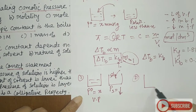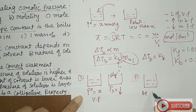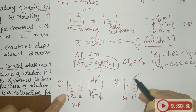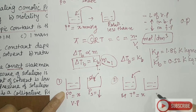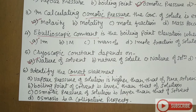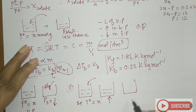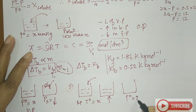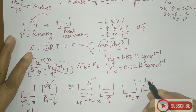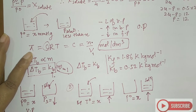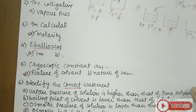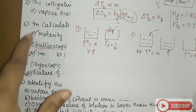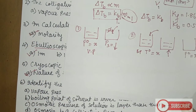For boiling point: adding a solute increases the boiling point of the solution. For osmotic pressure: the osmotic pressure of the solution increases compared to the pure solvent. Osmosis itself is not a colligative property, so any statement calling osmosis a colligative property is wrong.